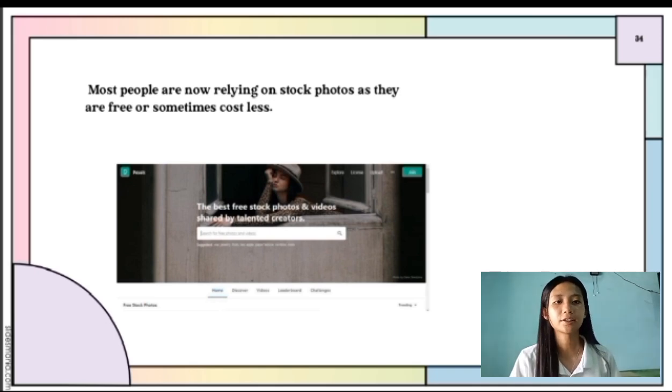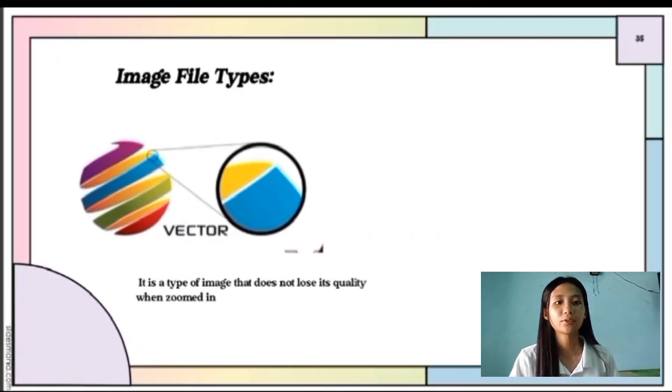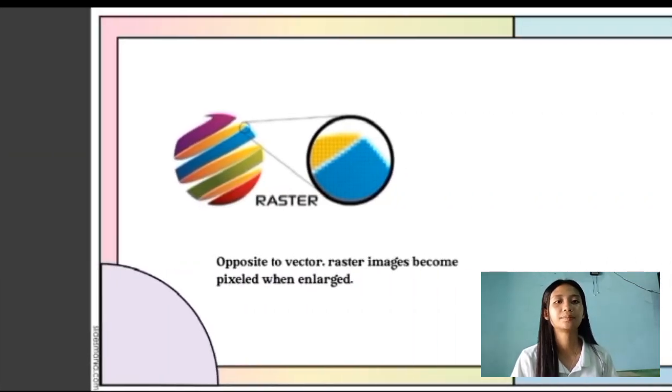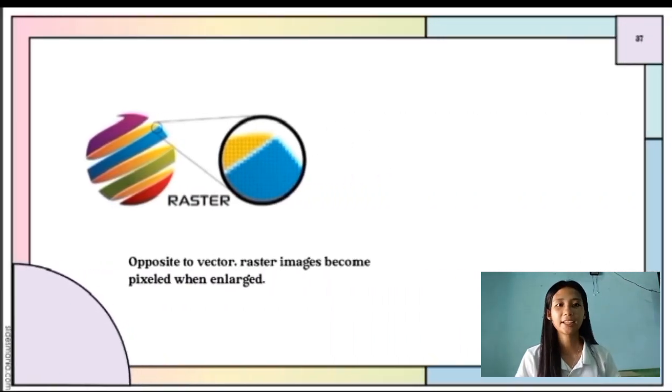We have two categories of file type images. The first one is vector. It is a type of image that does not lose its quality when zoomed in. Your image will not be pixelated when enlarged. The second one is raster. Opposite to vector, raster images become pixelated when enlarged.